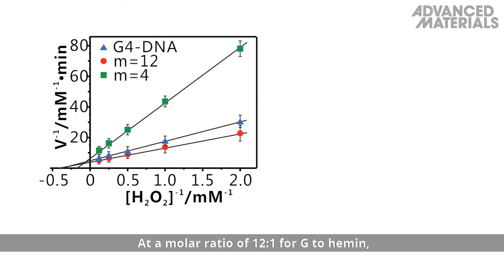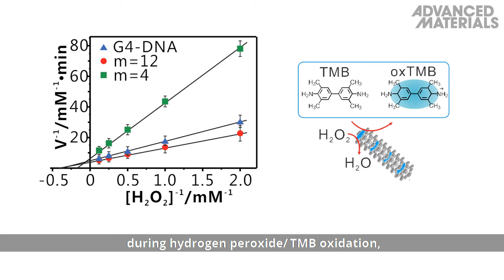At a molar ratio of 12 to 1 for G to hemin, the hydrogel was shown to mimic peroxidase during hydrogen peroxide TNB oxidation and significantly enhanced catalytic activity compared to free hemin.